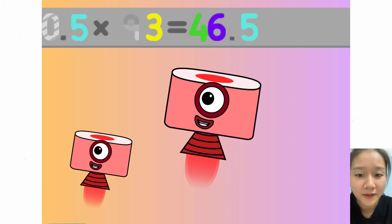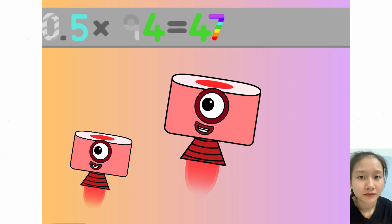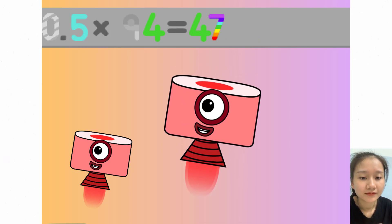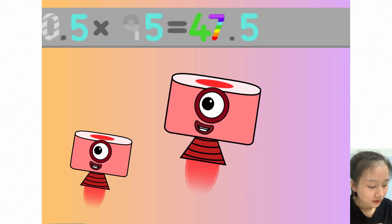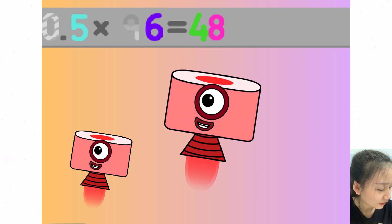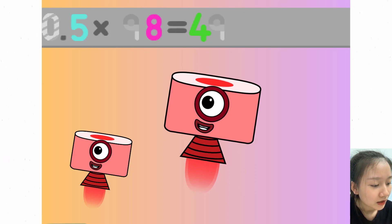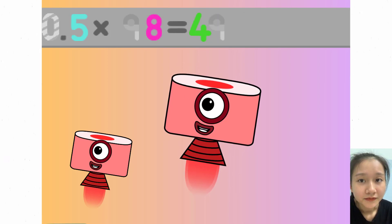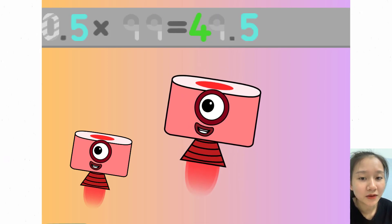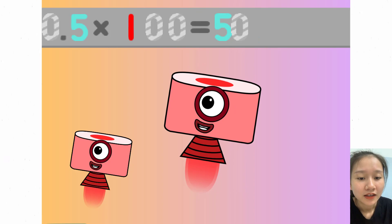0.5 times 93 equals 46.5. 0.5 times 94 equals 47. 0.5 times 95 equals 47.5. 0.5 times 96 equals 48. 0.5 times 97 equals 48.5. 0.5 times 98 equals 49. 0.5 times 99 equals 49.5. 0.5 times 100 equals 50. Thank you.